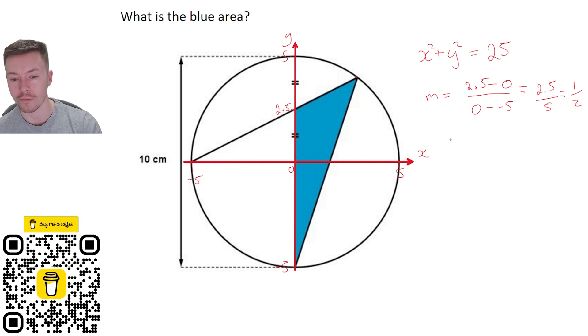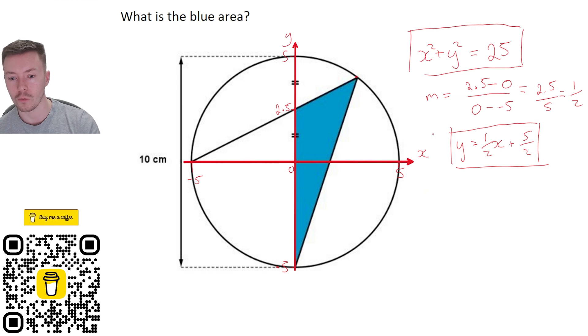That's going to give me 2.5 over 5, which is equivalent to one-half, and so that's my gradient. My y-intercept is easy—that's 2.5. So the equation of that line is going to be y equals one-half x plus 2.5. I'm going to leave it as 5 over 2 for the minute because I'm going to have to square all of this, and it's a lot easier to do mentally as a fraction. Now I'm going to take my equation of my line and my equation of my circle, and substitute one into the other so that I can solve where they intersect.